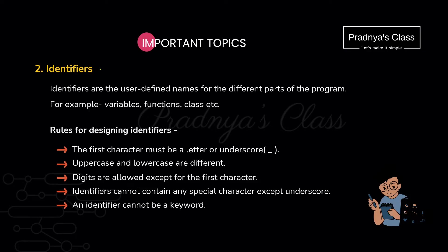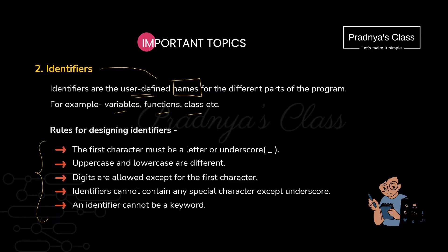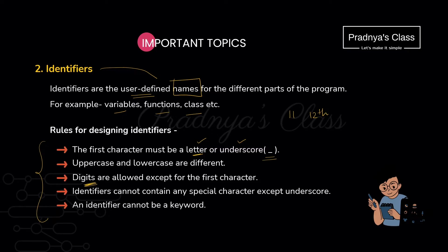The second token is identifier. An identifier is nothing but names which we give to variables, functions, or classes. These are user-defined names but to give the name we must follow certain rules. The first rule is that the first character must always be a letter or underscore. Digits are allowed but not as a first character. From special symbols, only underscore is allowed. You cannot use any keyword as an identifier, and uppercase and lowercase are different because Python is a case sensitive language.